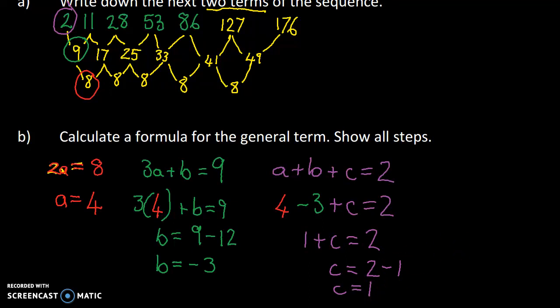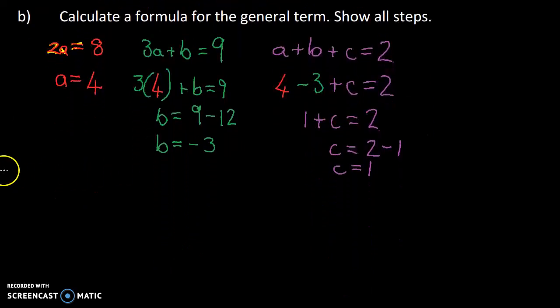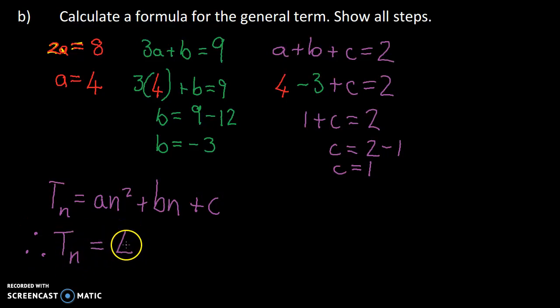So the general term for any quadratic formula has the form tn is equals to an squared plus bn plus c. So therefore, this general term is going to be tn is equals to 4n squared plus, well, let's actually just change that to minus 3n plus 1. There we go.